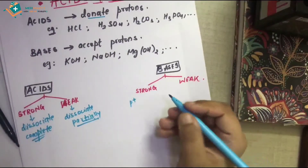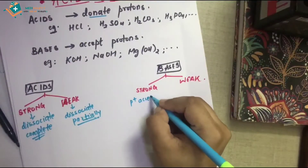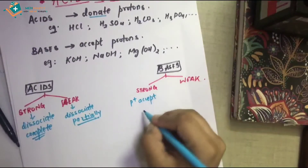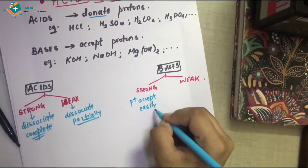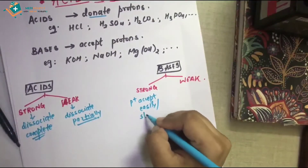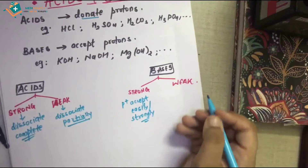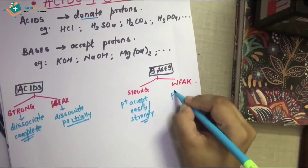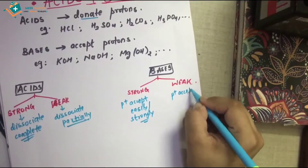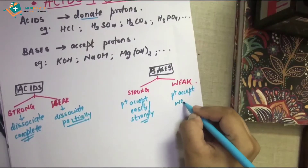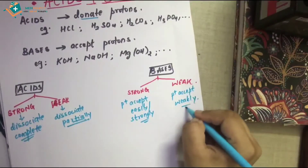In bases, strong bases are those that accept the proton strongly or easily. Moving on to weak bases — weak bases are those that accept the proton not very easily, or only weakly.